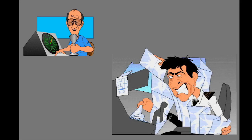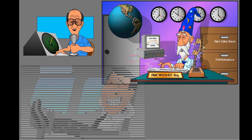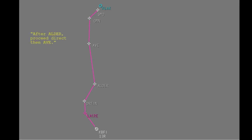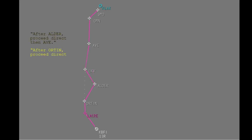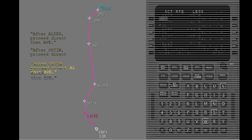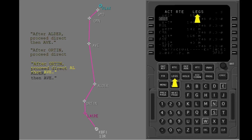Air traffic controllers frequently make many changes to your route of flight. With the FMC, you can easily change your flight plan route. Your route contains many waypoints. Here is an example of some changes you can do. Use the legs page to add, delete, and change the sequence of waypoints in your flight.